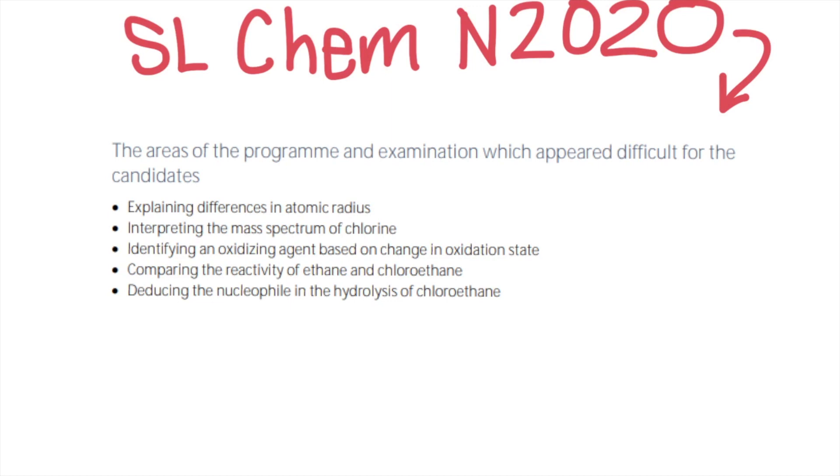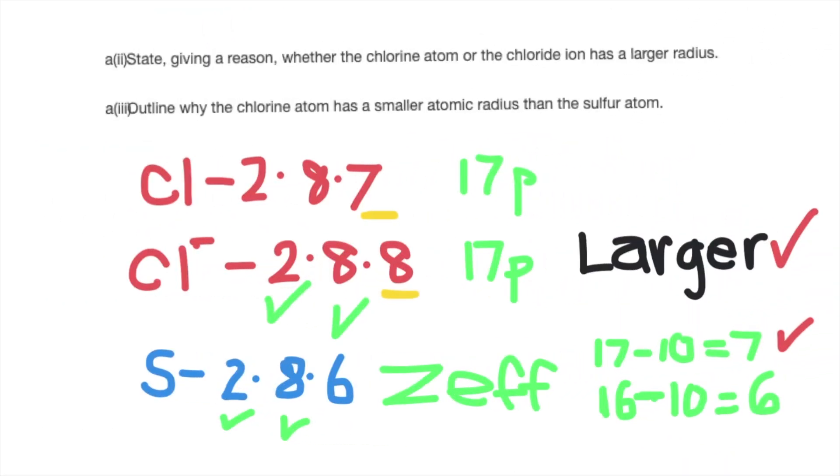This first question deals with the early part of the syllabus, atomic structure. The chlorine atom has the electronic structure 2-8-7, but the chloride ion has a structure of 2-8-8. Both carry 17 protons and are both shielded by the same two inner electrons followed by eight outer electrons. So it follows that the species with the eight electrons on the outside has got the same effective nuclear charge as the one with seven electrons on the outside.